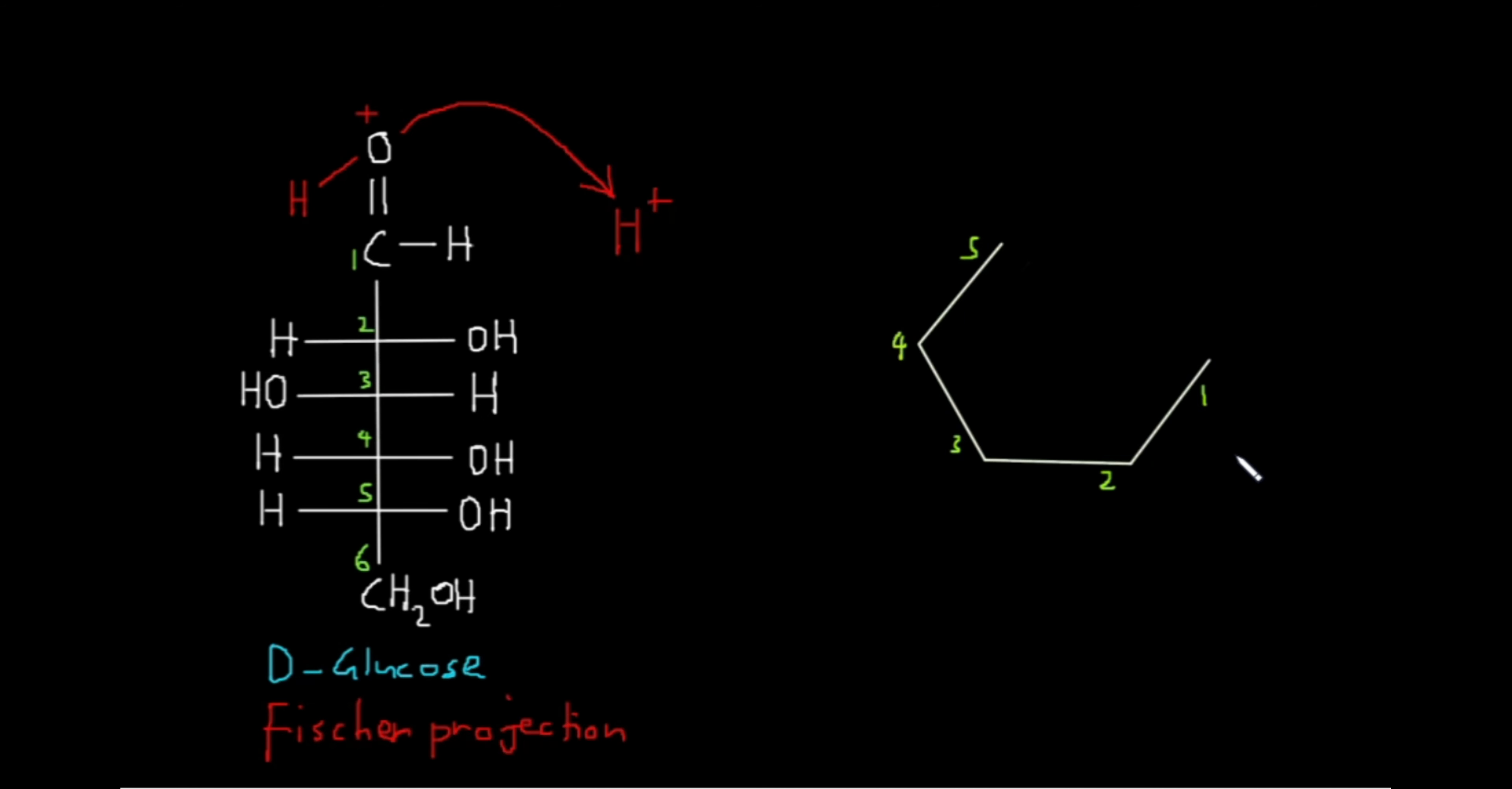Now before we move to the fifth carbon, first let's complete the bonds of the rest of the carbon atoms. The first carbon atom is just part of the aldehyde group, so we can draw that here. We have the aldehyde group with the H and double bond O, and this oxygen was protonated.